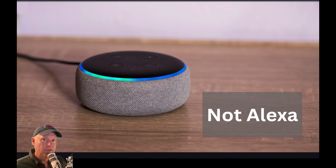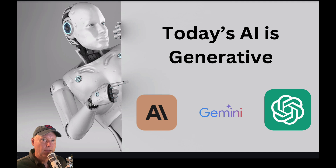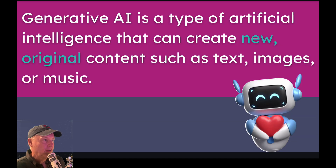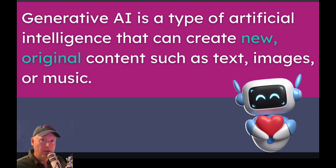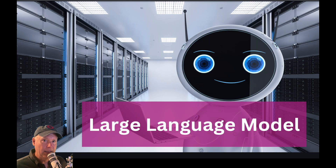The difference is it's generative — so it generates its own content. Here are three companies we'll talk about in a moment that do that. Generative AI is a type of artificial intelligence that can create new and original content, such as text, images, music, and on and on.